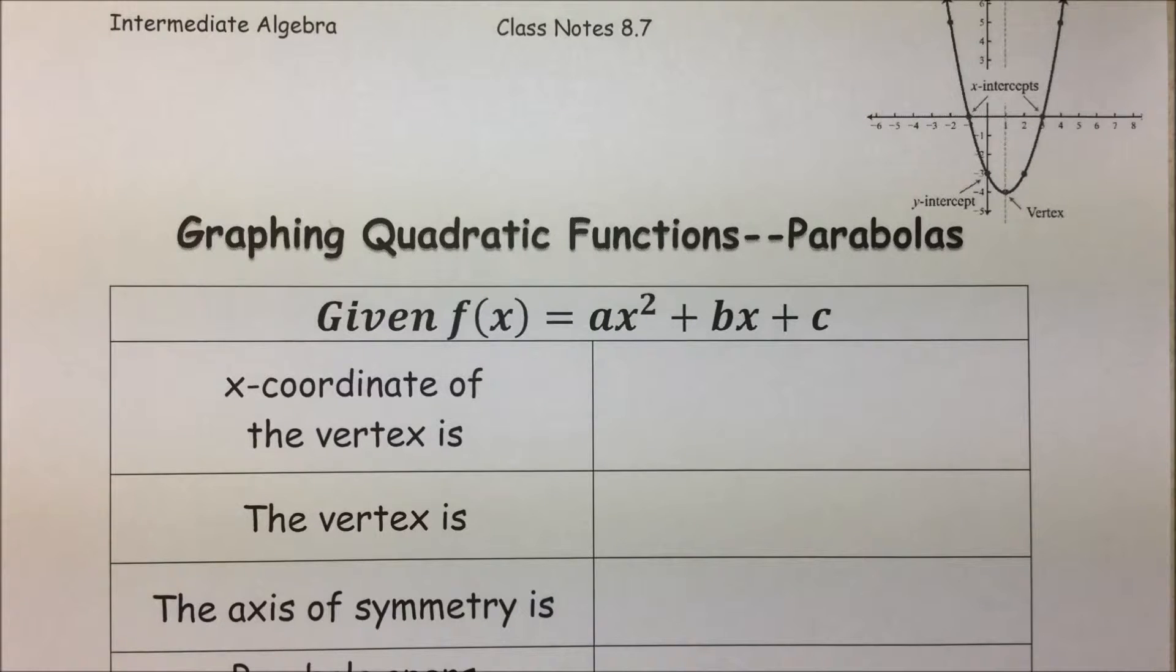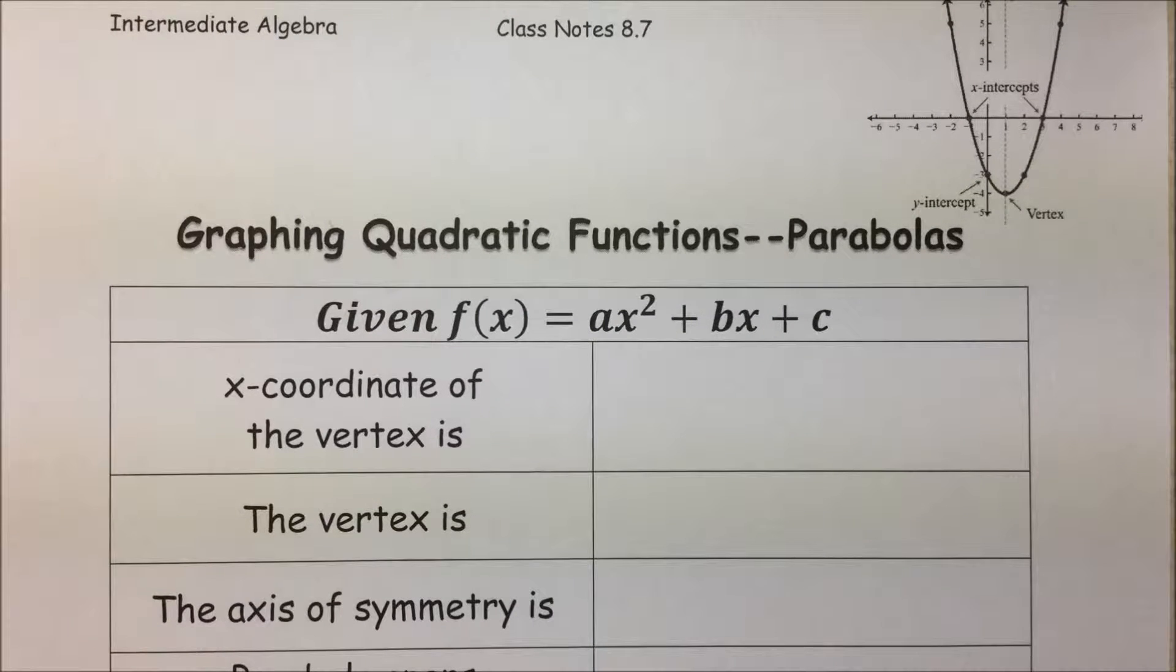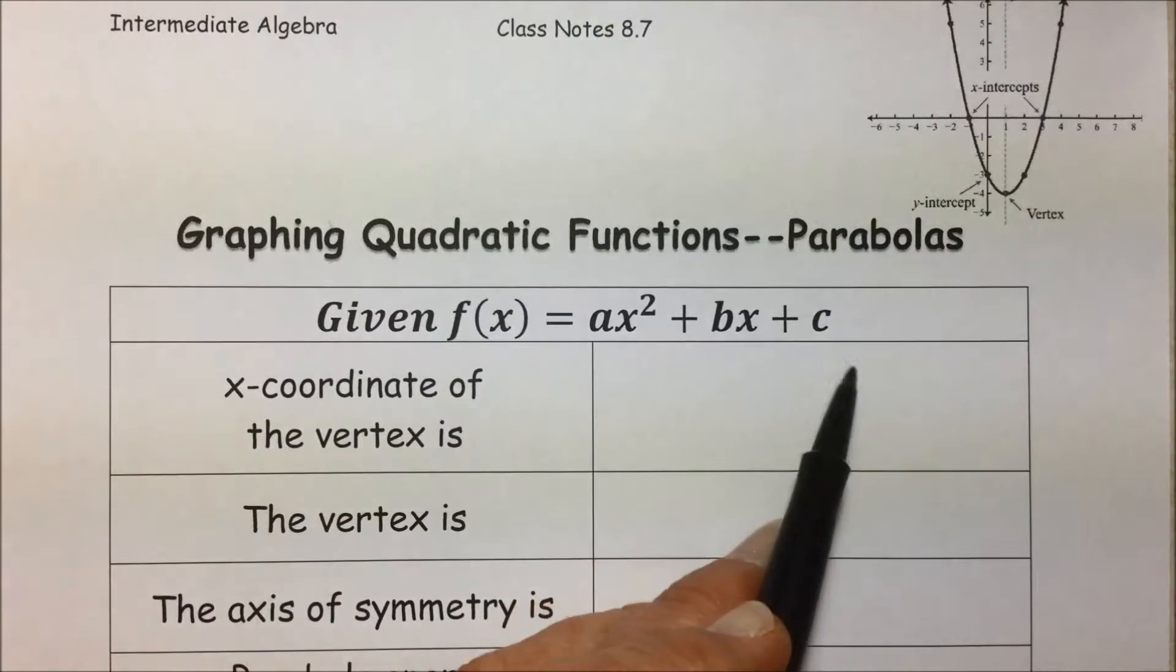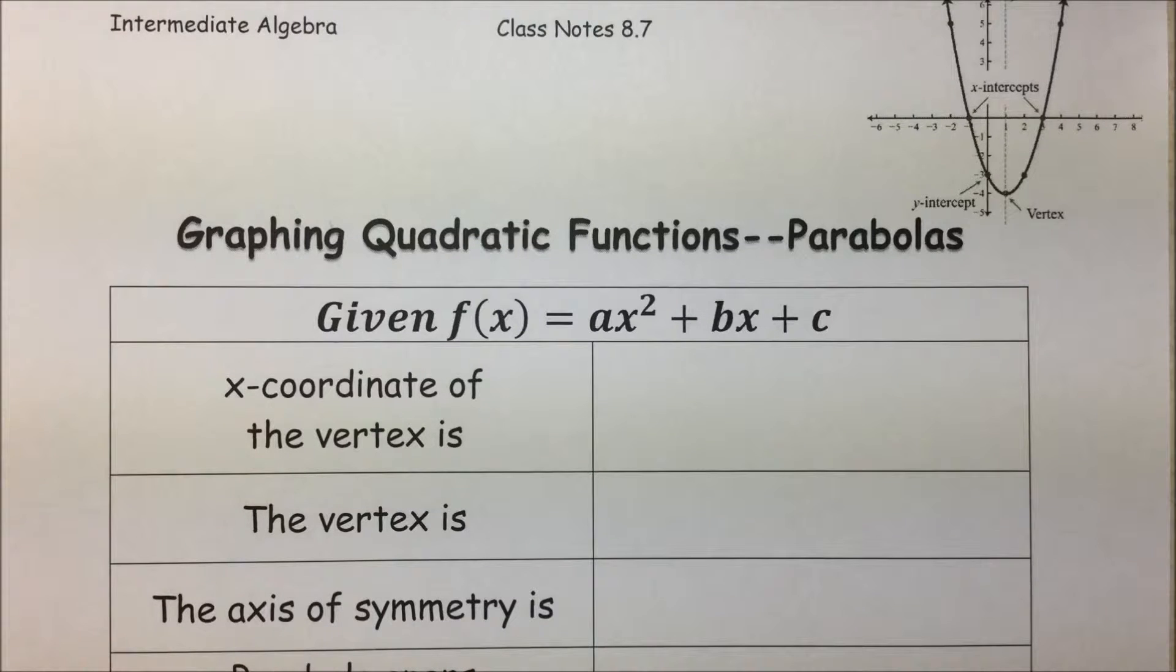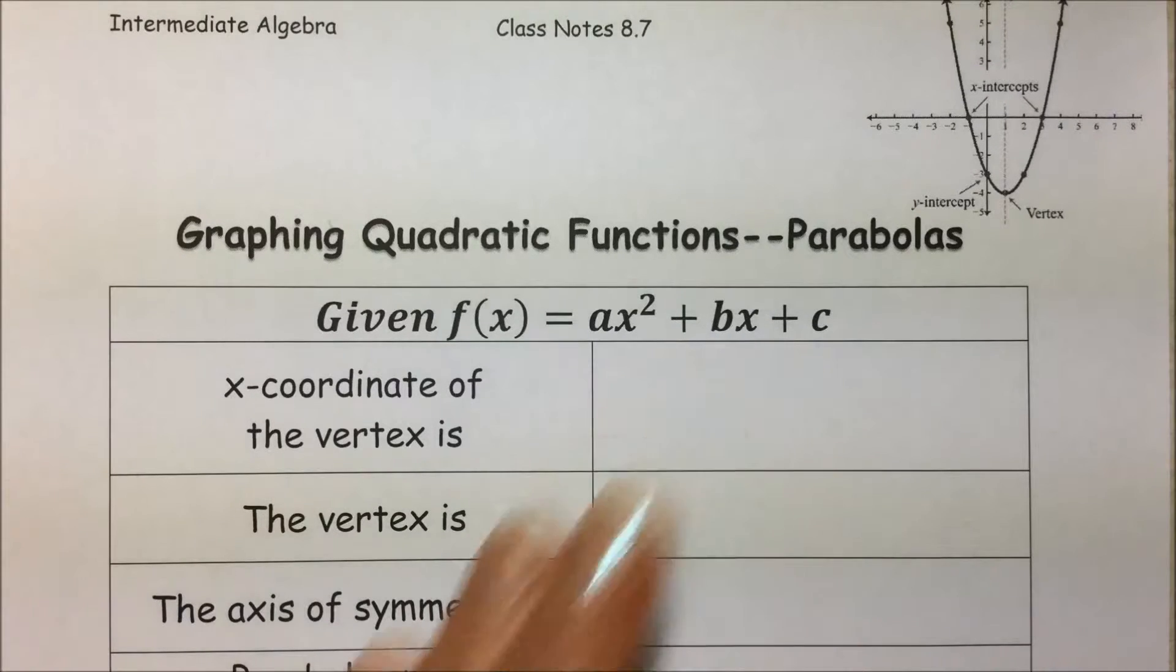By completing the square, we can rewrite any polynomial of the form ax² + bx + c in the form of a(x - h)² + k, and this will allow us to graph any quadratic function.